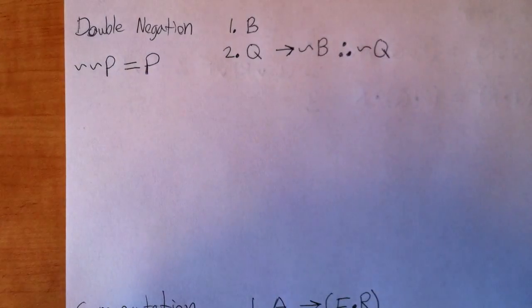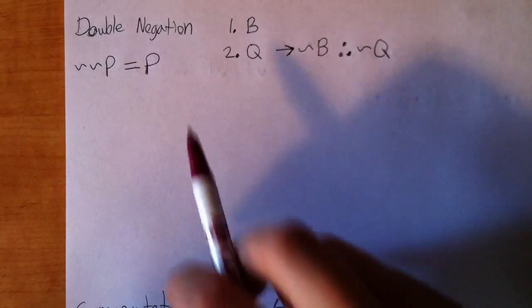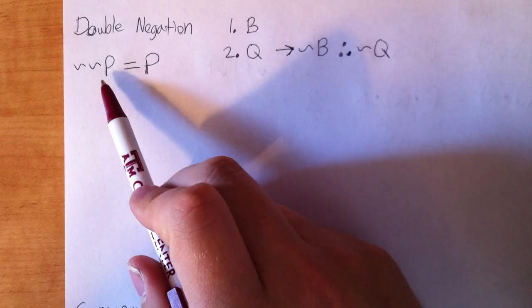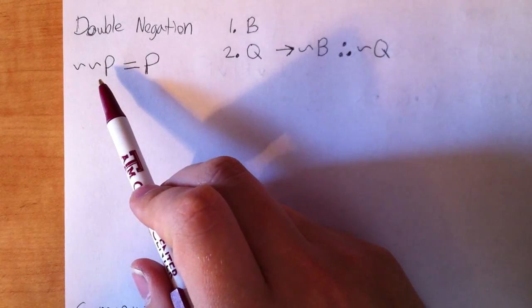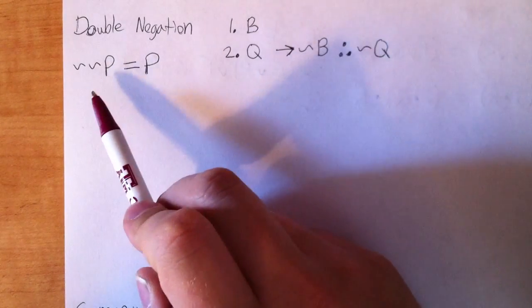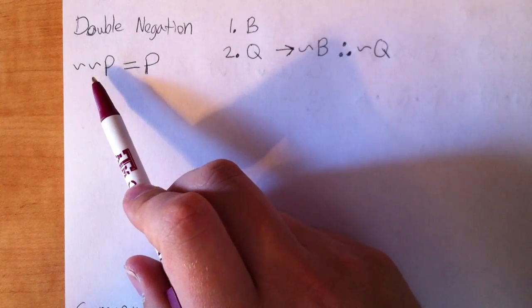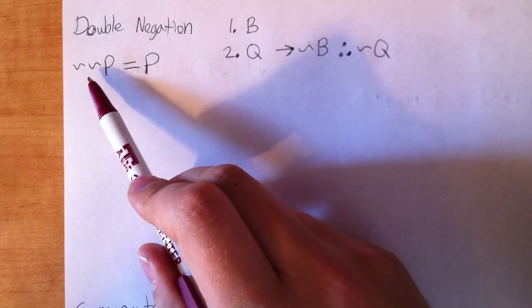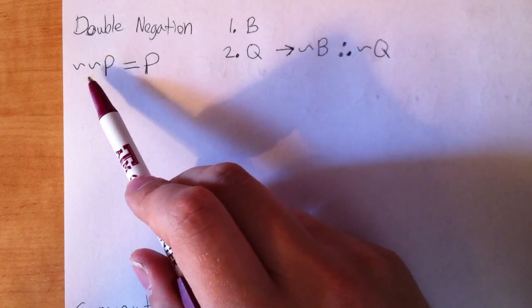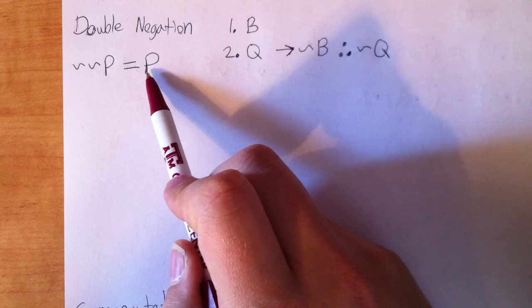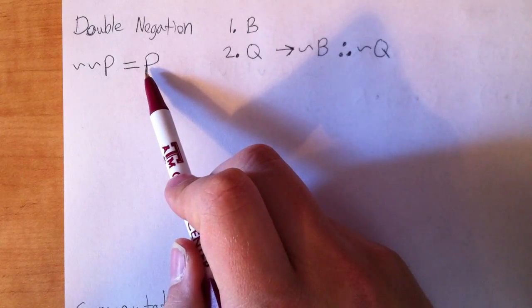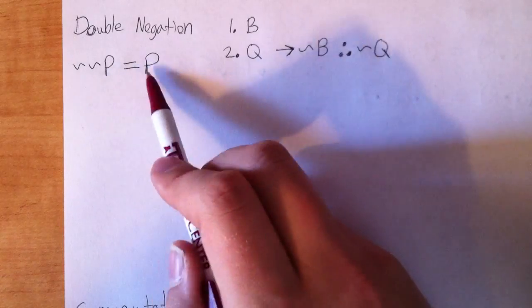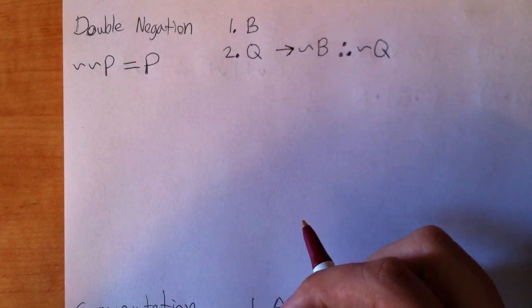Essentially, the basic rule for double negation says that something that is tilded twice is equal to an untilded thing. That sounds kind of confusing, but basically, imagine P stands for Pittsburgh will win the Super Bowl. Pittsburgh will win the Super Bowl is equal to Pittsburgh won't not win the Super Bowl. Those two things are logically equivalent. This is the negation of a negation of P. So these two things are equal. So what does that actually mean? Let's see it in a proof.